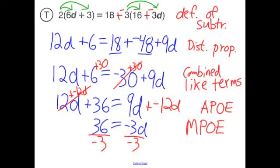Negative 3 over negative 3 is 1. And 1 times d is d. So I'll put the final answer over here. 36 divided by negative 3 is negative 12. So our final answer is negative 12. And we've now solved a relatively long equation. And the answer is d equals negative 12.